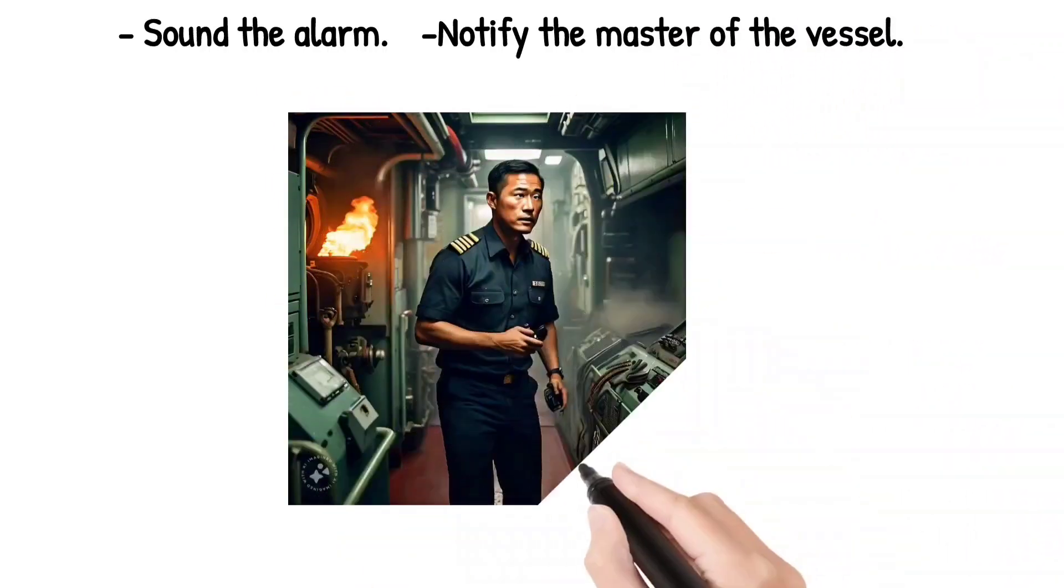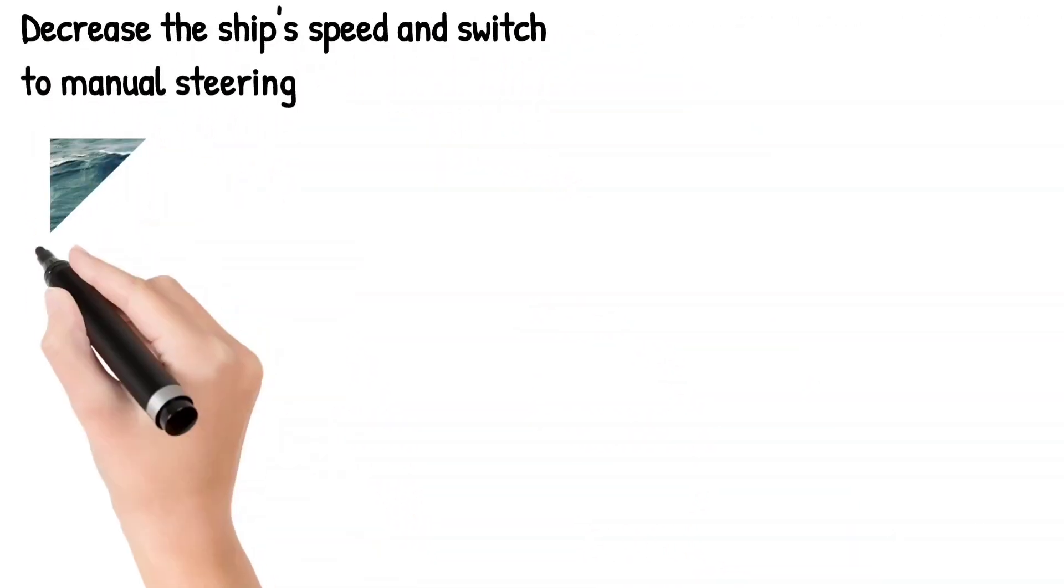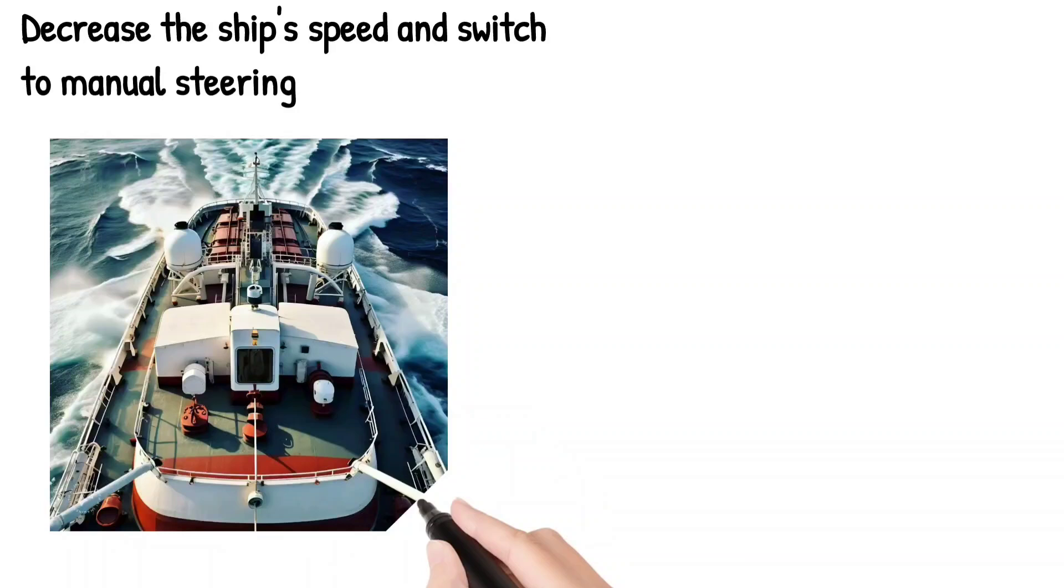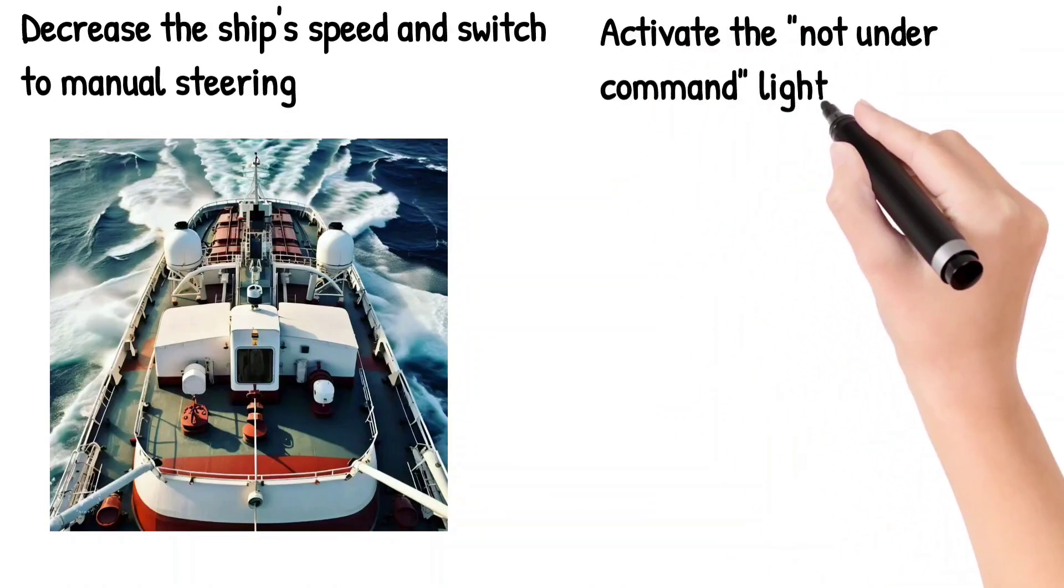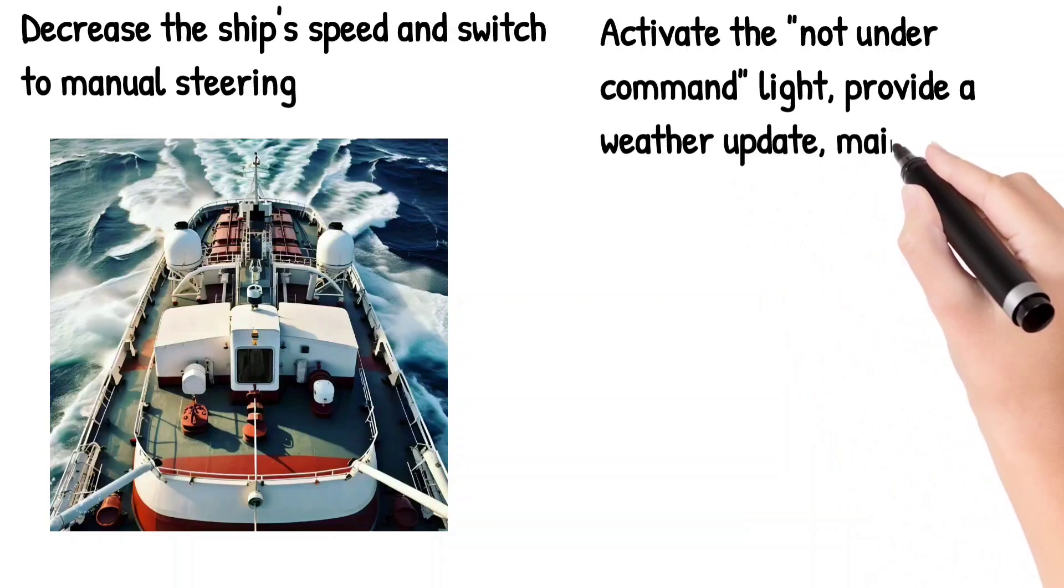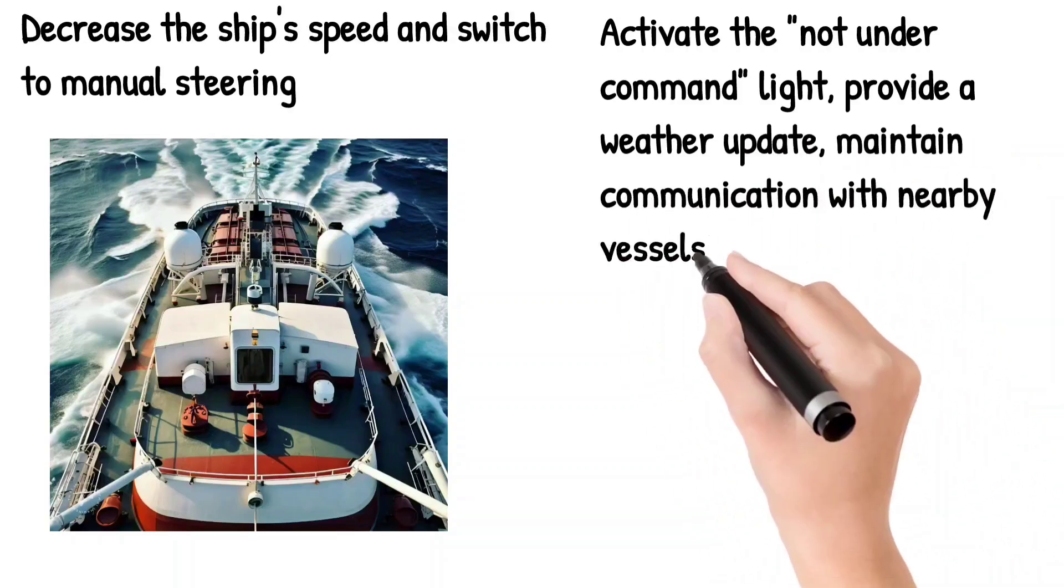I'm trying to draw pictures in all these so that you cannot forget all this. Then decrease the ship's speed and switch to manual steering. Then activate the not under command light and provide a weather update and maintain communication with the nearby vessels.